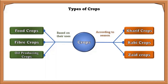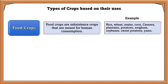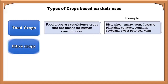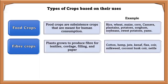Food crops are subsistence crops meant for human consumption. They include fruits, vegetables, grains, and tubers like potatoes. Some common food crops are rice, wheat, maize, corn, cassava, plantains, potatoes, sorghum, soybeans, sweet potato, and yams.